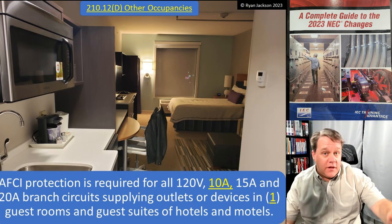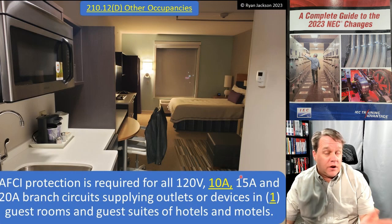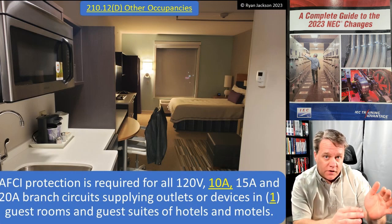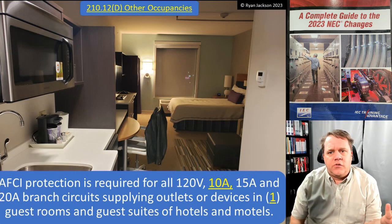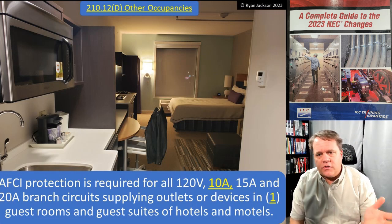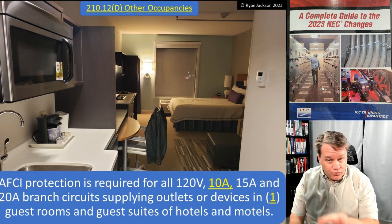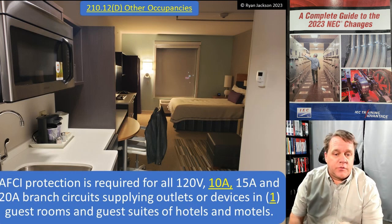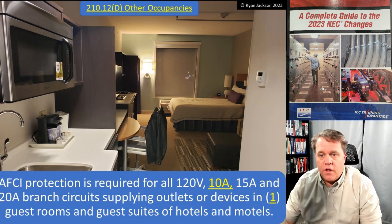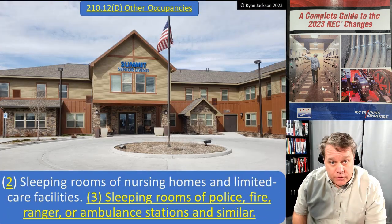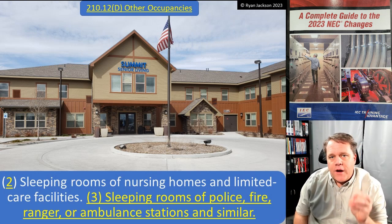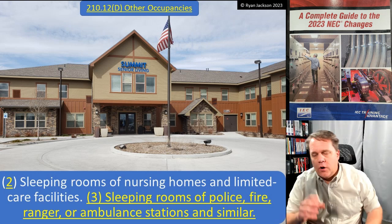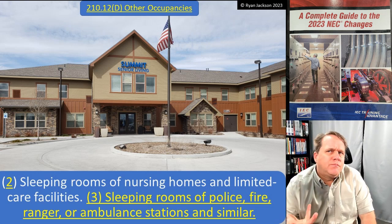So what changed? Not much yet. Section 210.12 is organized with part A covering types of AFCI devices, B for dwelling units, C for dormitories, and D for hotels and motels, and then other occupancies including guest rooms and guest suites of hotels and motels, sleeping rooms of nursing homes and limited care facilities, and sleeping rooms of police, fire, ranger, and ambulance stations and similar occupancies.